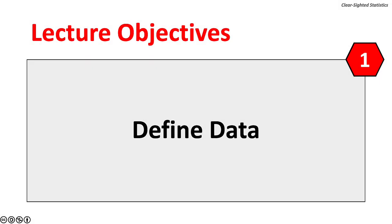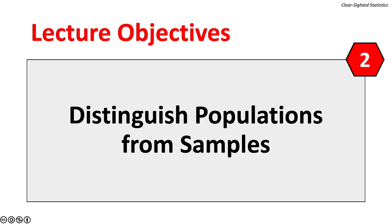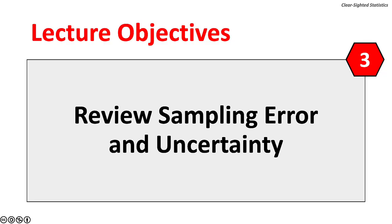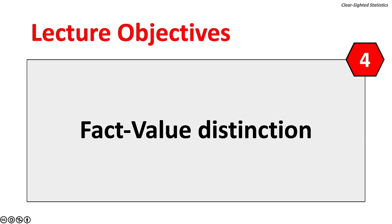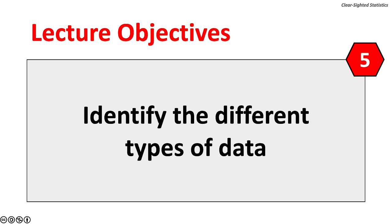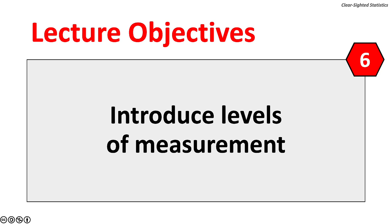There are six objectives for this lecture. First, the term data will be defined. Two, populations and samples will be distinguished. Three, sampling error and uncertainty will be reviewed. Four, the fact-value distinction will be discussed. Five, different types of data will be identified. And six, the four levels of measurement will be reviewed.